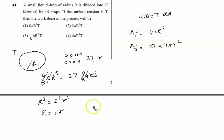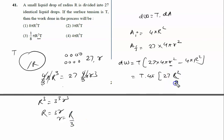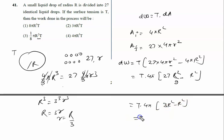So we write dW equal to T into (final area minus initial area). Since droplets are forming, final area is greater than initial. This gives T into (27 × 4π r² minus 4π R²). Taking 4π common, and substituting r = R/3, so r² = R²/9, we get T × 4π × (27 × R²/9 − R²) = T × 4π × (3R² − R²) = T × 4π × 2R² = 8πR²T.